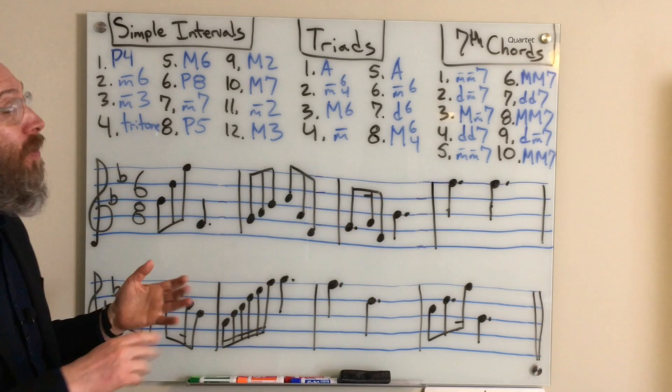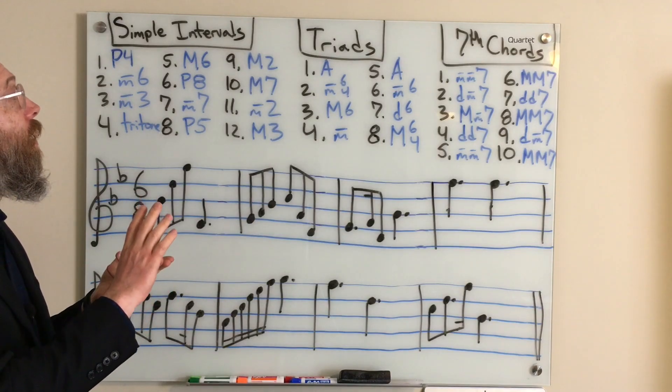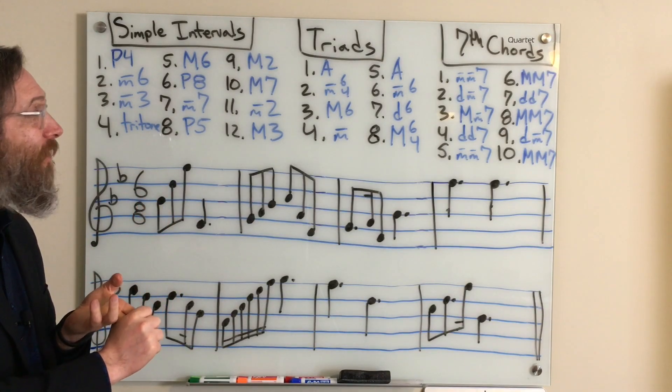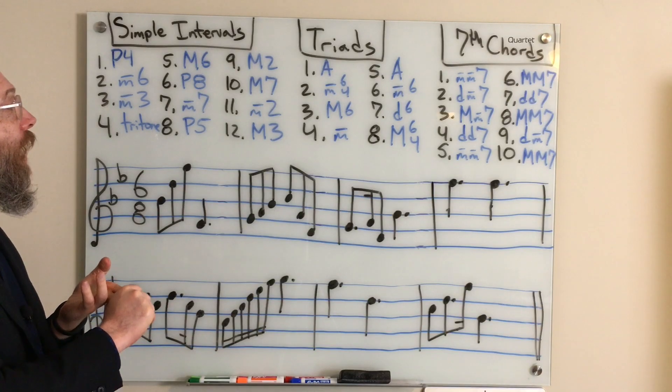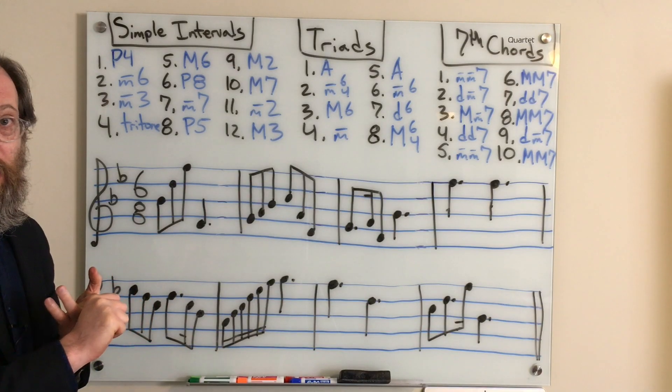Number 9 was a major 2nd. Number 10 a major 7th. 11 a minor 2nd. And 12 a major 3rd.